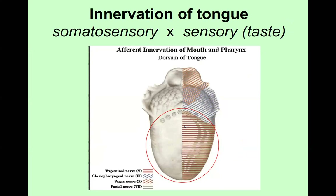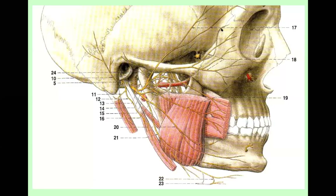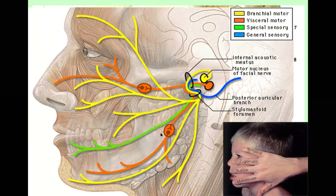The innervated area for taste is half of the anterior two-thirds of the tongue — without the vallate papillae, which are already innervated by the glossopharyngeal nerve.